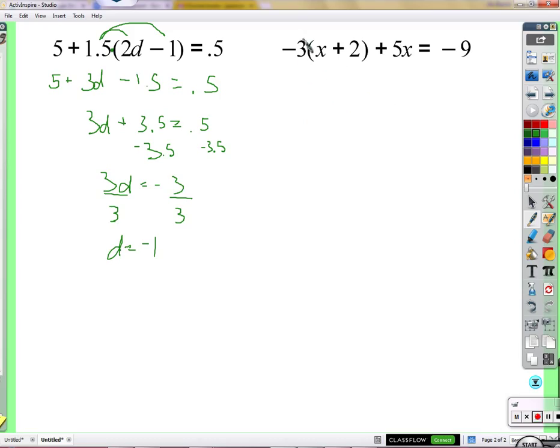Alright, so hopefully you gave that a try. We're going to distribute the negative 3. Negative 3 times x is negative 3x. Negative 3 times 2 is negative 6. Plus 5x equals negative 9. Negative 3x plus 5x, that's 2x. We have the minus 6 there still, equals negative 9.